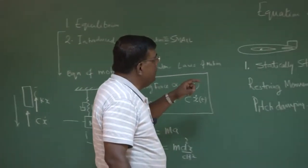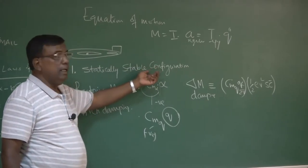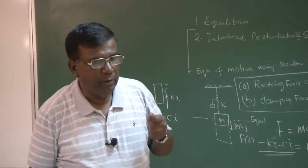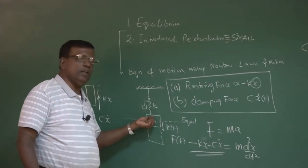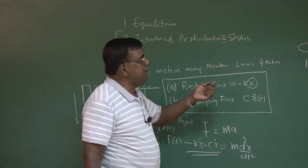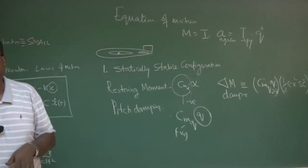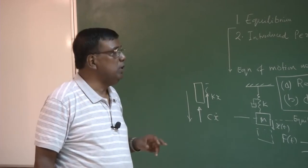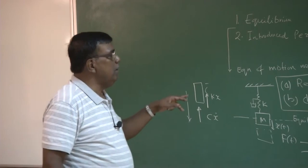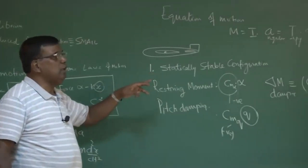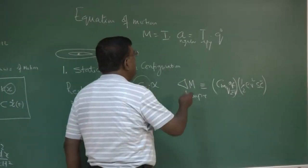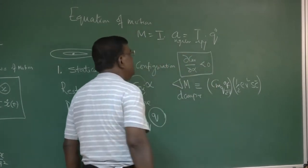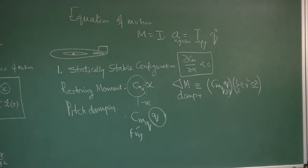Please understand very clearly: we are talking about a statically stable configuration. If the airplane is not statically stable, the spring analogy will not work, because if there is a disturbance it will not try to restore — it will diverge. So when drawing this analogy, I am clear I am talking about a statically stable configuration, for which dC_m/dα must be less than 0. That is the condition for static stability in the longitudinal case.